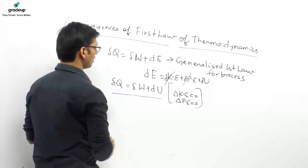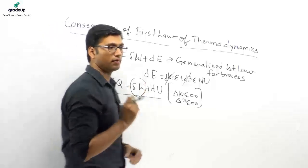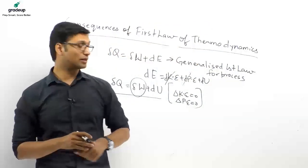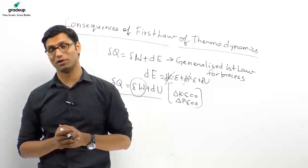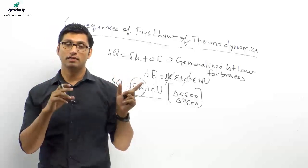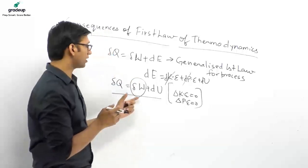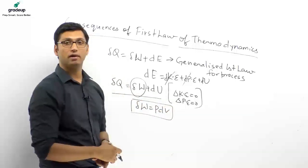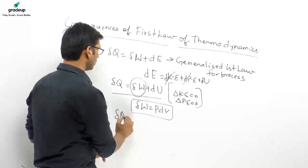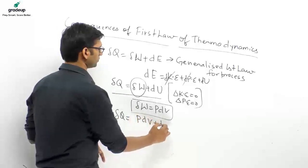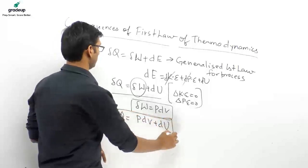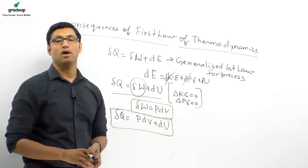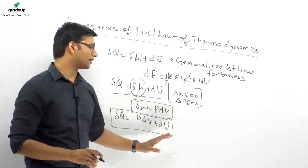For a closed system undergoing a reversible process, the work is non-flow work or boundary work, equal to PdV. Substituting: δQ = PdV + dU. This is another form of the first law for a closed system undergoing a quasi-static process with boundary work. These are important equations to remember.